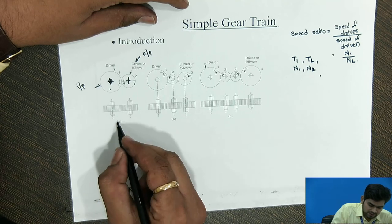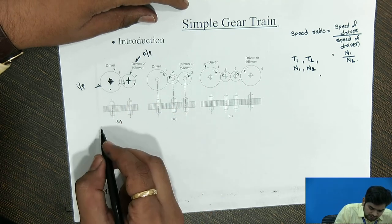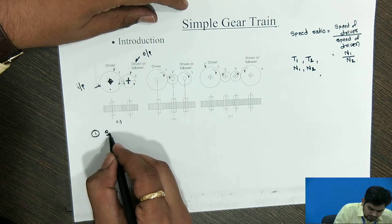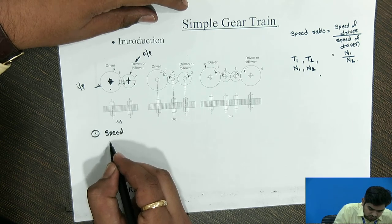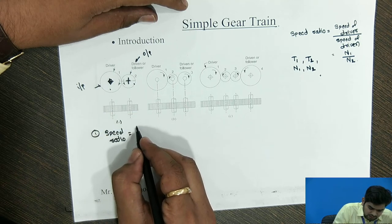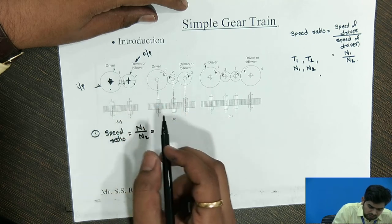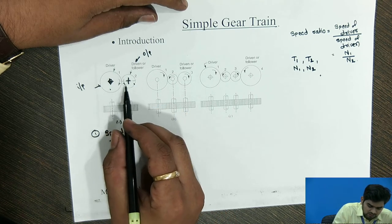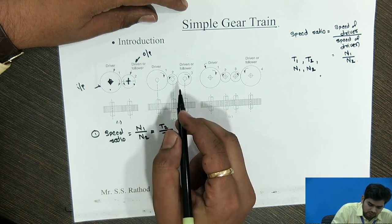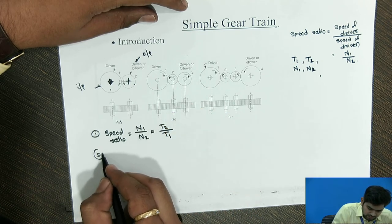So in figure (a), the driver is gear 1 with diameter d1. The speed ratio is equal to n1/n2 = t2/t1.